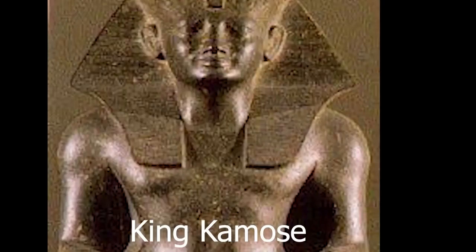Evidence of one such great ruler is found in the first stele of Kamose. The stele is a stone slab with inscriptions detailing the achievements of rulers. Kamose was the last king of the 17th dynasty in Egypt and probably the first king who mounted and organized resistance against the Hyksos invaders. This slab also depicts the political situation in the Nile Valley at that time and shows evidence of an independent kingdom of Kush.